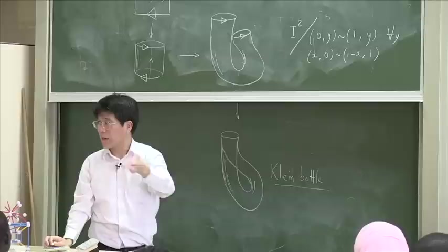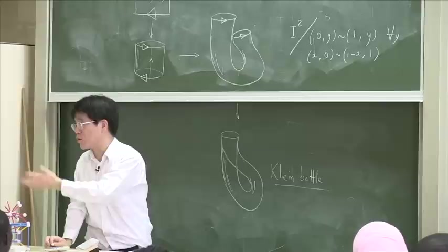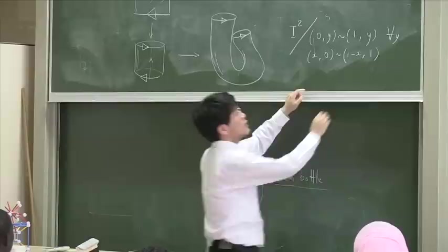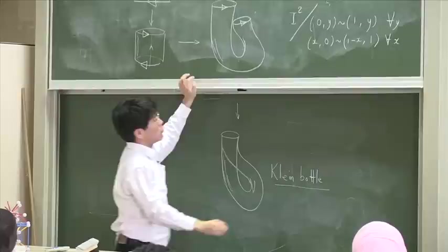1 minus x times 1, not x minus 1. The opposite of x is not x minus 1, but 1 minus x. Opposite of, because I'm measuring from 1, measuring from 0. Anyway, so this is for me. So, that is orientation reversing. That's orientation preserving. And if you do that, you get the Klein bottle.